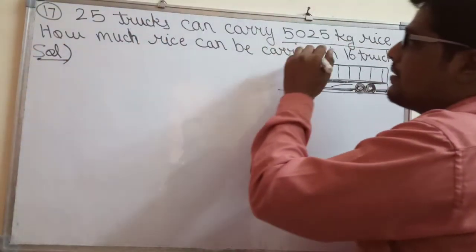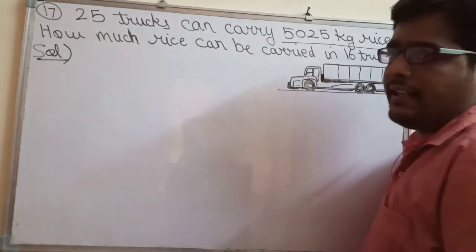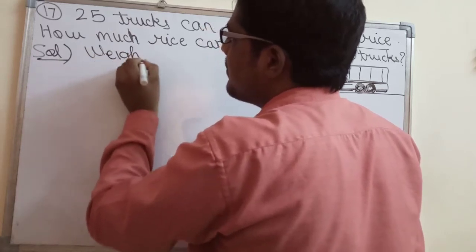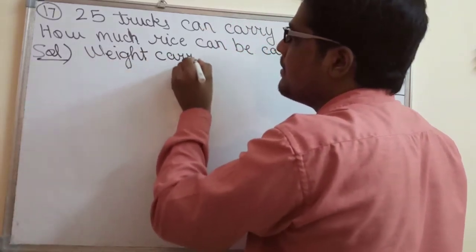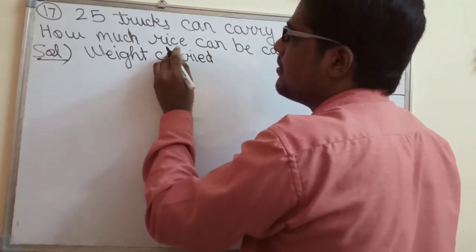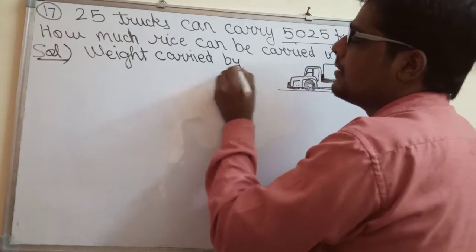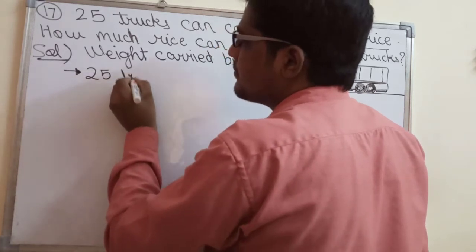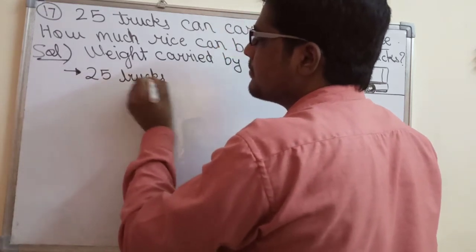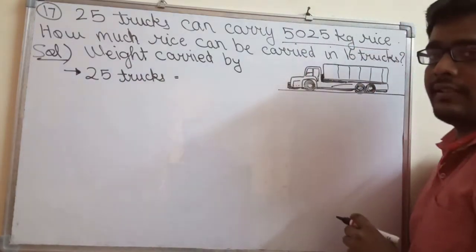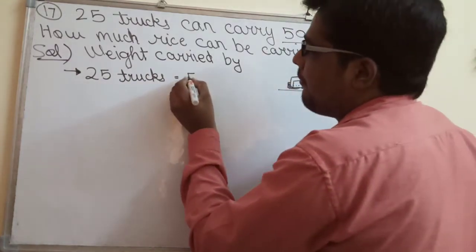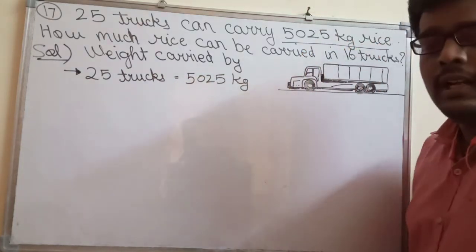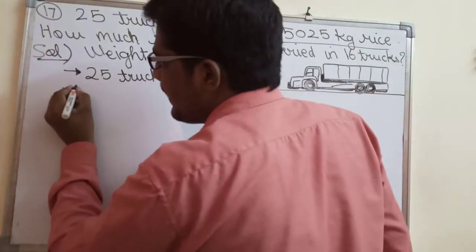Solution. First, write what is given in the question. Weight carried by 25 trucks — so how much total weight do 25 trucks carry? 5,025 kg. Now from this we will find the weight for one truck.